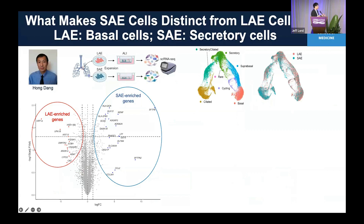Firstly, what is actually different between large and small airways at the gene level? We performed bulk RNA sequencing, which characterizes the whole culture information, not cell-type specific. Here are shown small airway-enriched genes and large airway-enriched genes.